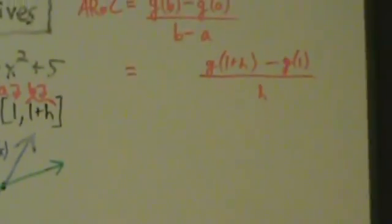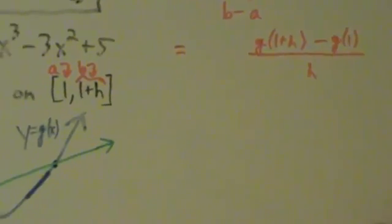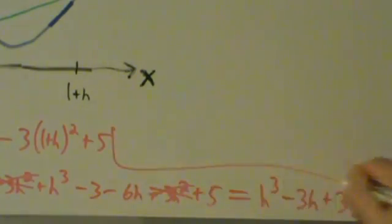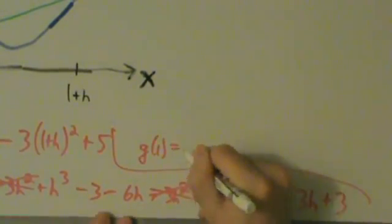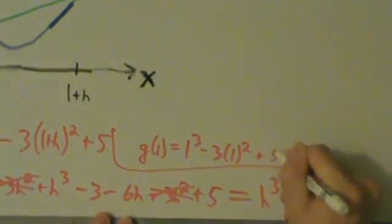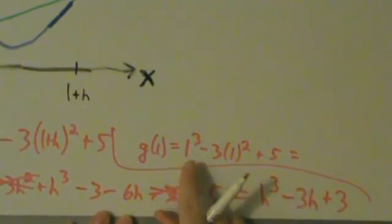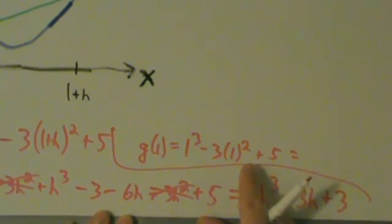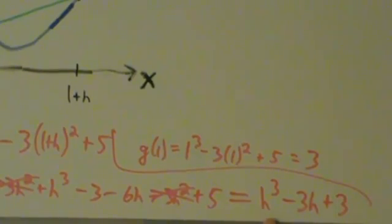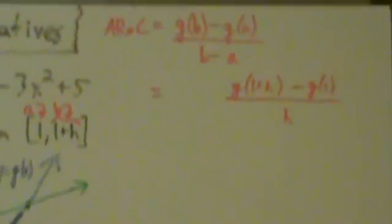Now we've got to figure out what g of 1 is — that's going to be easier. G of x is x cubed minus 3x squared plus 5, so g of 1 is 1 cubed minus 3 times 1 squared plus 5, which is 1 minus 3 plus 5, which is 3. So g of 1 is 3.